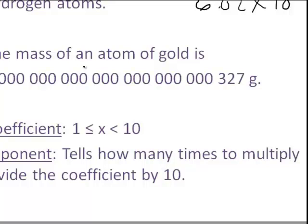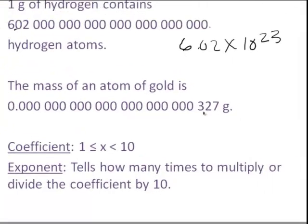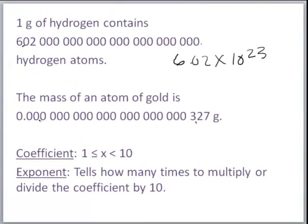Now let's look at the example of a really small number — the mass of an atom of gold. What we want to do is take the decimal and move it over so it's behind the three. We have to count how many spaces that would be.